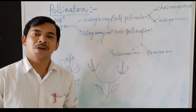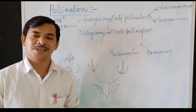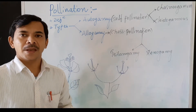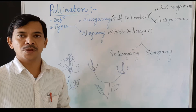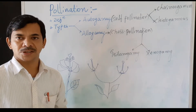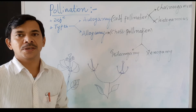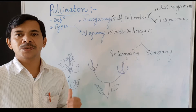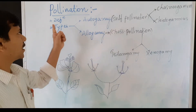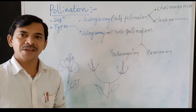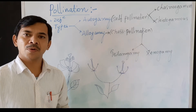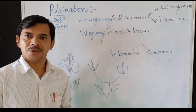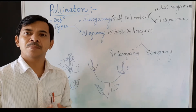Hi dear students, welcome back to biology class. In this session we are studying about pollination. Looking at the board, we are discussing the definition and types of pollination. The definition is: the transfer of pollen grains from the anther to the stigma of the flower. This is called pollination.